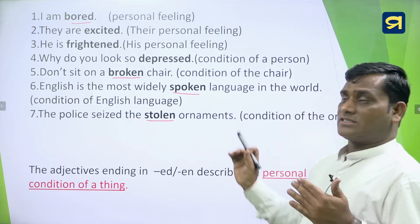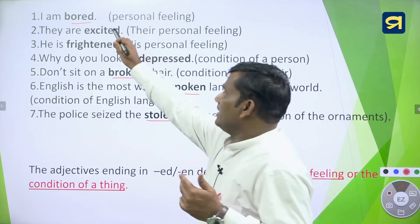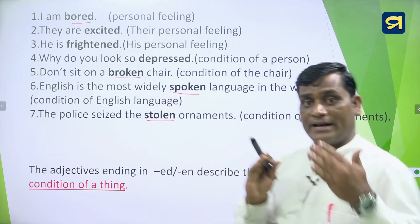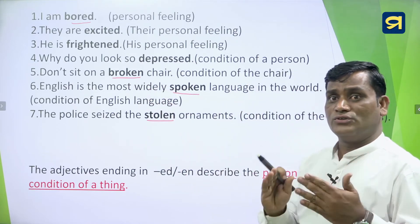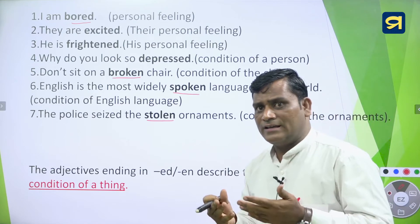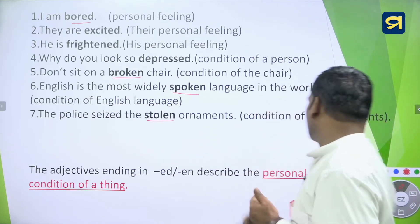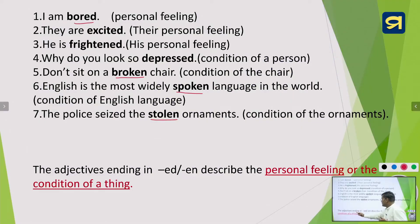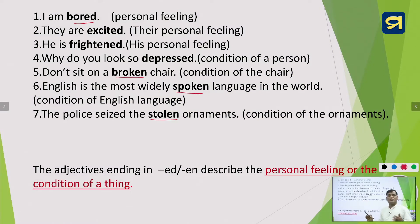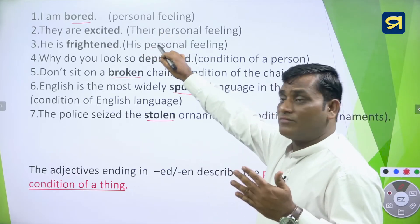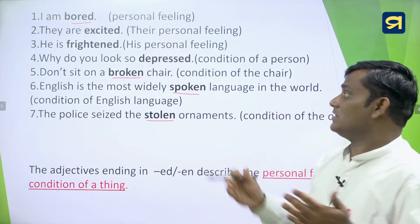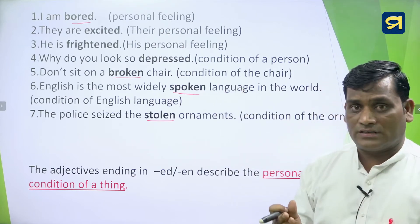From all these discussions, the adjectives ending in ED or EN form are generally used to express the feeling of a person as well as to express the condition of things. Some ED or EN forms describe the feeling of a person; some describe the condition of a thing.